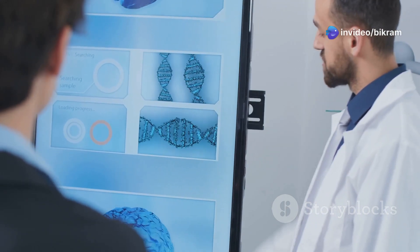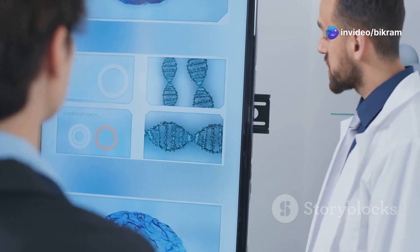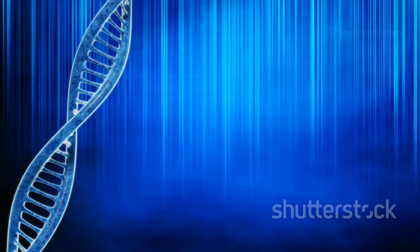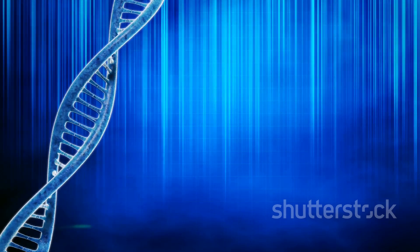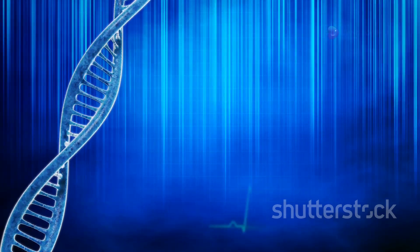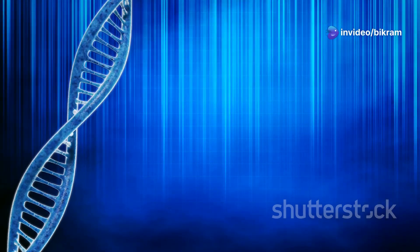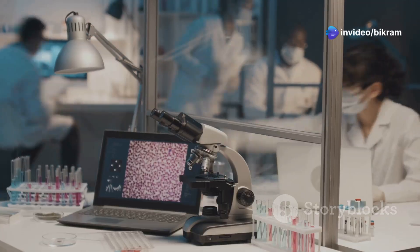Imagine Dicer as a skilled chef, meticulously chopping ingredients into precise sizes for a recipe. Dicer doesn't just cut dsRNA randomly. It recognizes specific structural features in the dsRNA molecule, ensuring that the resulting siRNAs are the right size and shape to guide gene silencing.